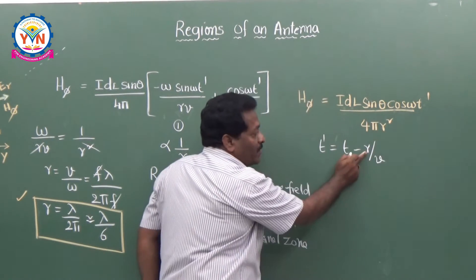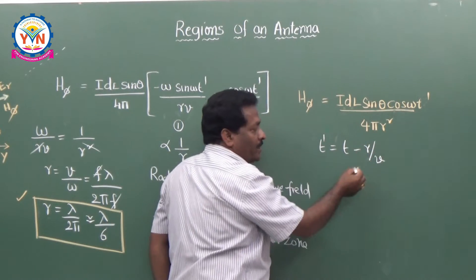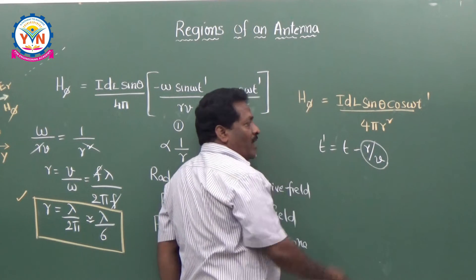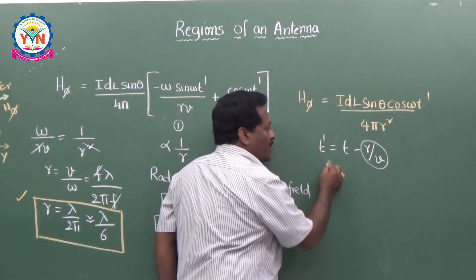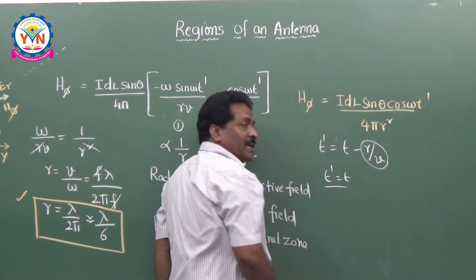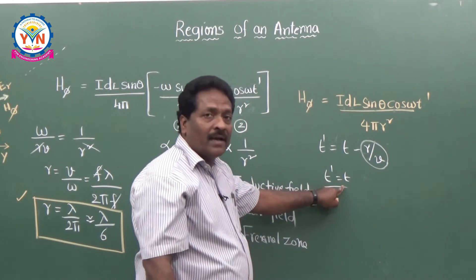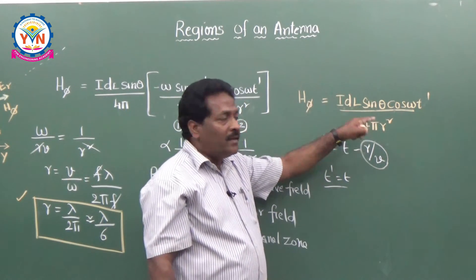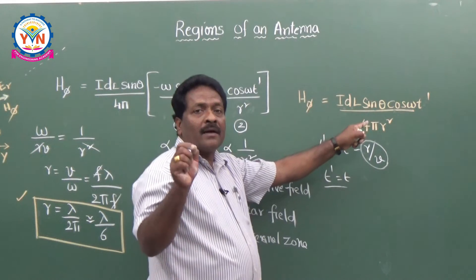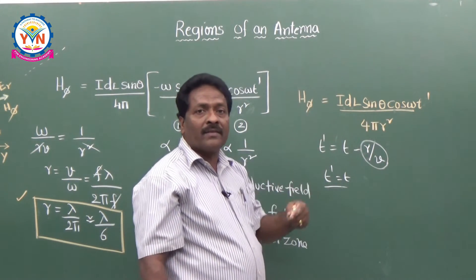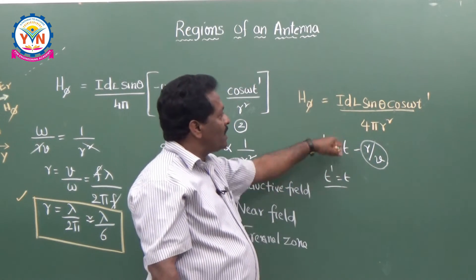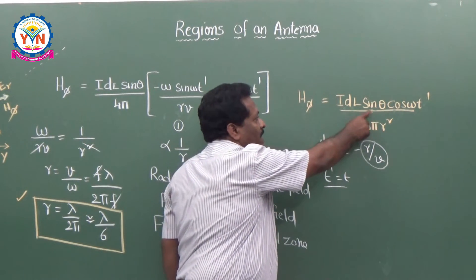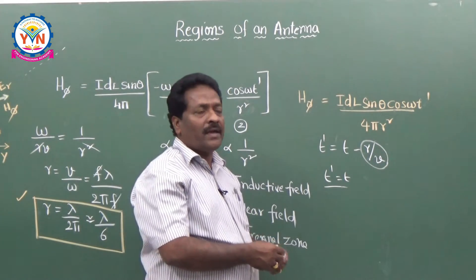Here, t′ = t − R/v, where R/v is the retarded time — the delayed time. But whenever you are very close to this antenna, R is very small, so R/v is negligible and can be neglected. Then t′ ≈ t. That means at a point closest to the antenna, there is no delay in the potentials, and the expression becomes the same as the Biot-Savart magnetic field expression for a current element.